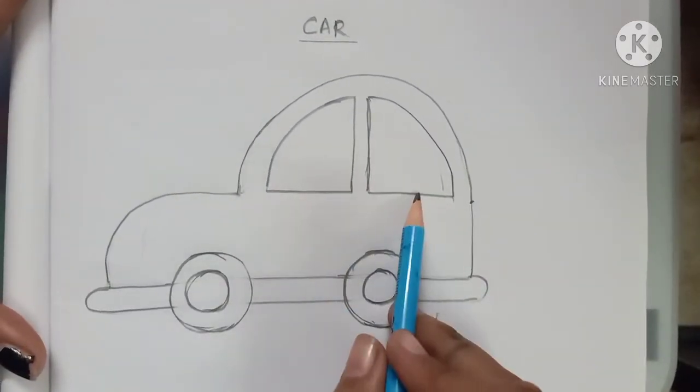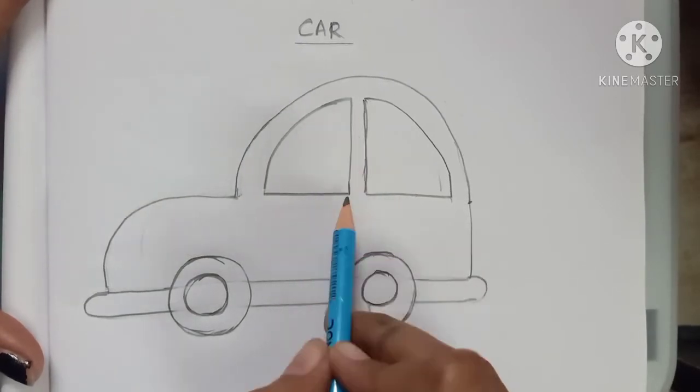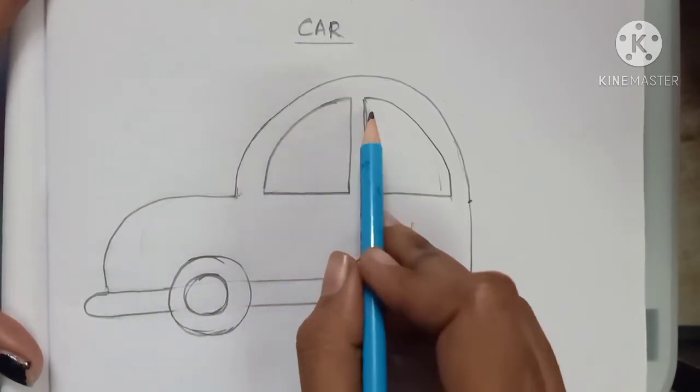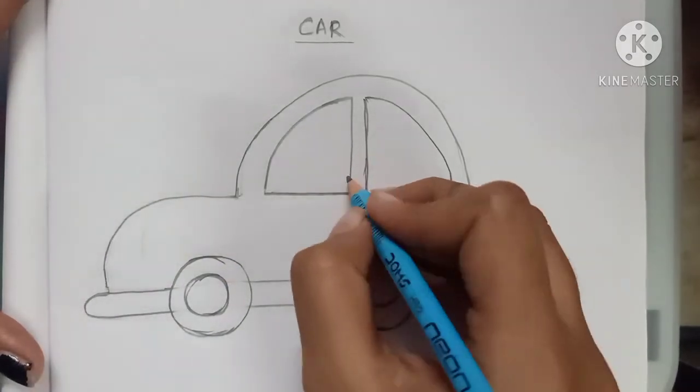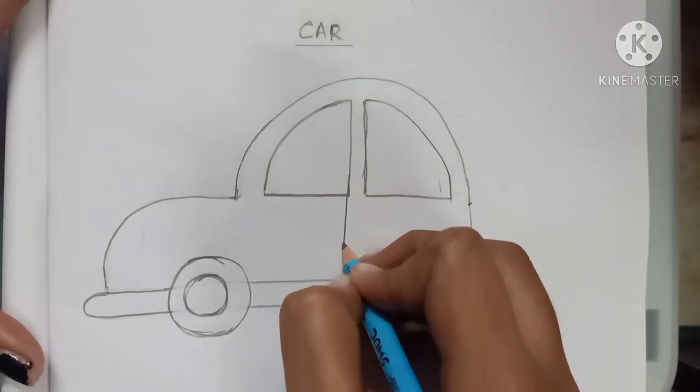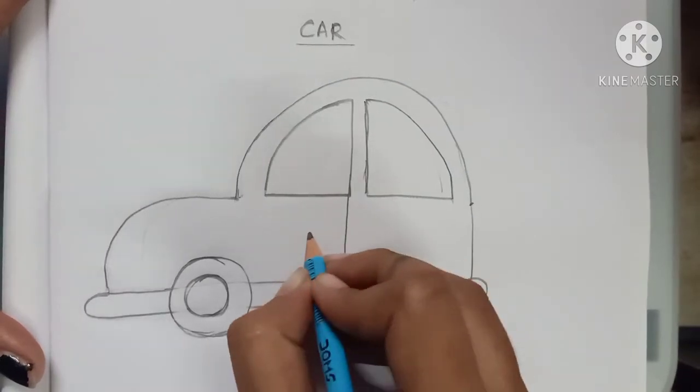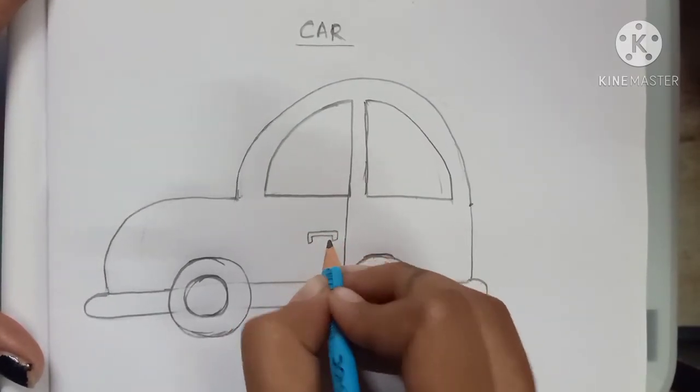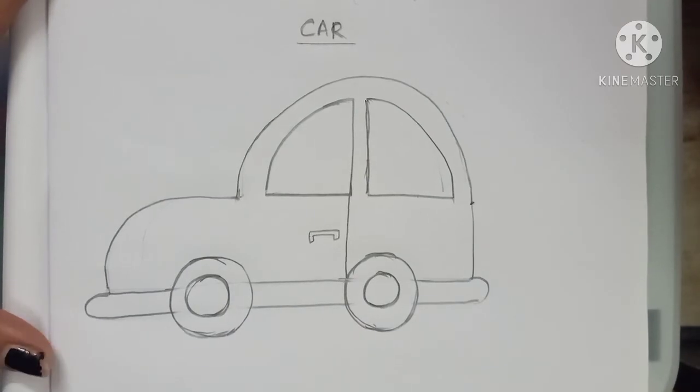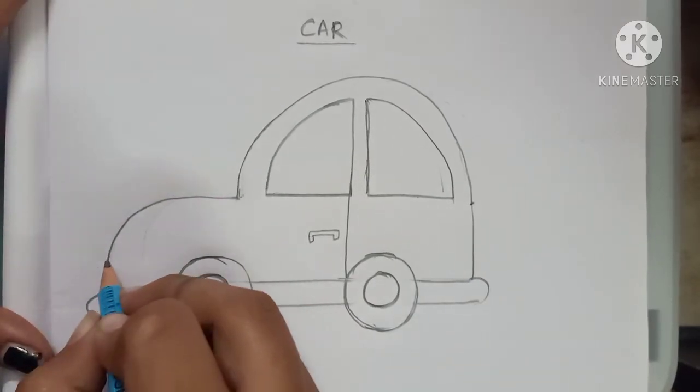Make two windows like this: standing line, sleeping line, curve, standing line, sleeping line, curve. For the door, just extend this line and make a handle here. For the headlight, like this, and the backlight.